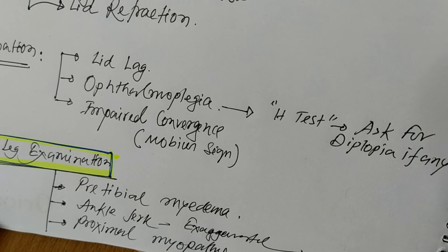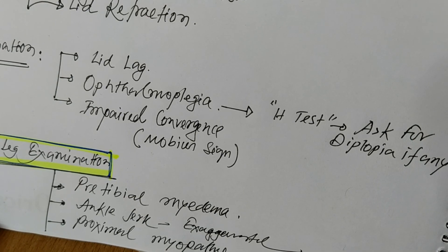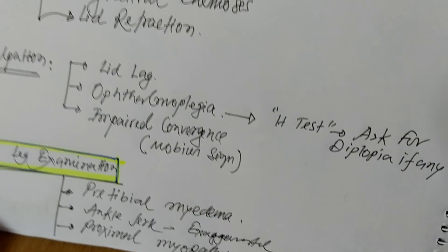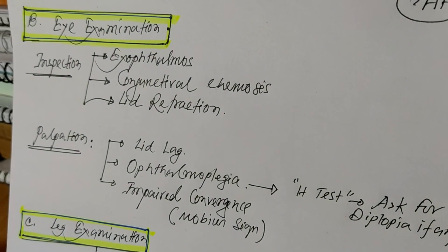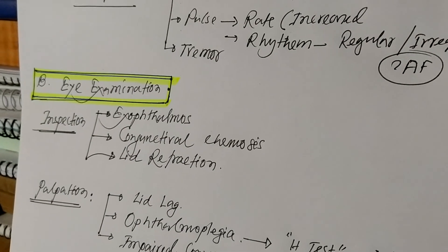The third point on leg examination is proximal myopathy. This is all about how to evaluate a patient with Graves' disease for the functional status of the thyroid gland.